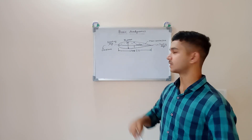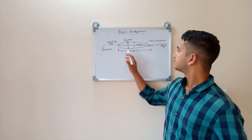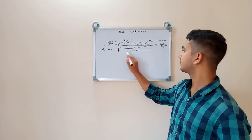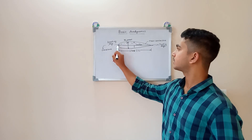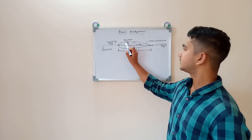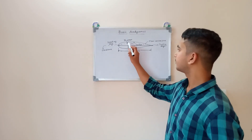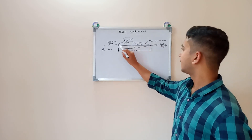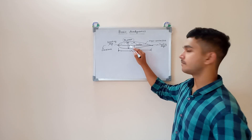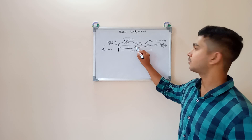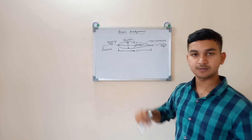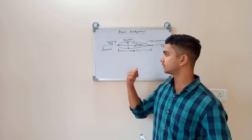This is the airfoil nomenclature. I have taken a symmetrical airfoil here. The distance between the leading edge and the trailing edge is called the chord. The forward point on the airfoil section is the leading edge, and the rearmost point is the trailing edge. The distance between the upper and lower surface of the airfoil is called the thickness. The locus of the points between the upper and lower surface is called the mean camber line. The maximum distance between the mean camber line and the chord line is called the camber. The line passing through the leading edge and trailing edge is called the chord line.